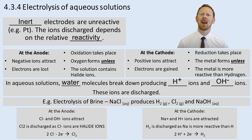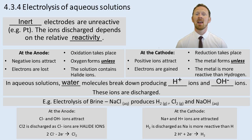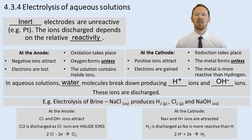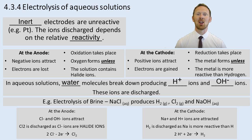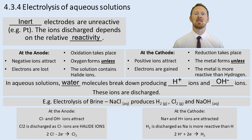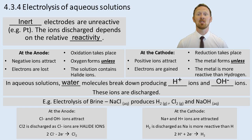Let's look at a common example — you must know this, it comes up again and again. Electrolysis of brine, sodium chloride, NaCl. In this electrolysis you have H⁺ ions, Na⁺ ions, Cl⁻ ions, and OH⁻ ions in solution. You need to know that the products are hydrogen (H₂), chlorine (Cl₂), and sodium hydroxide (NaOH).